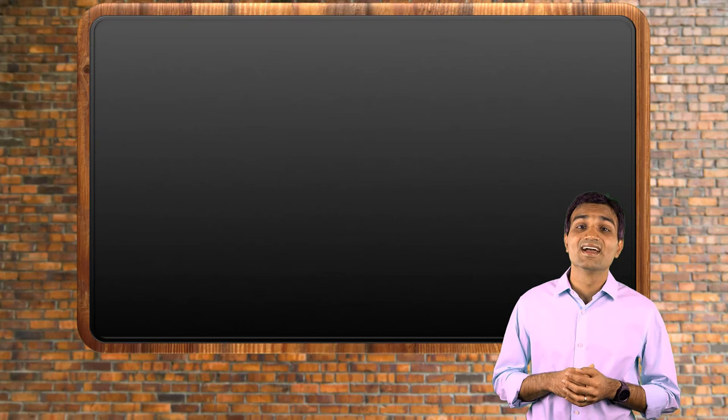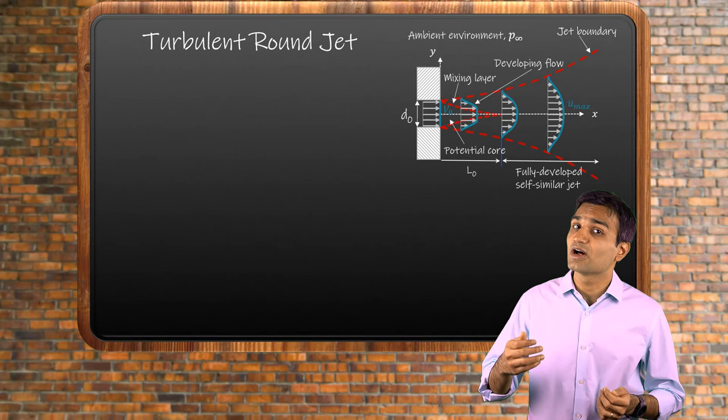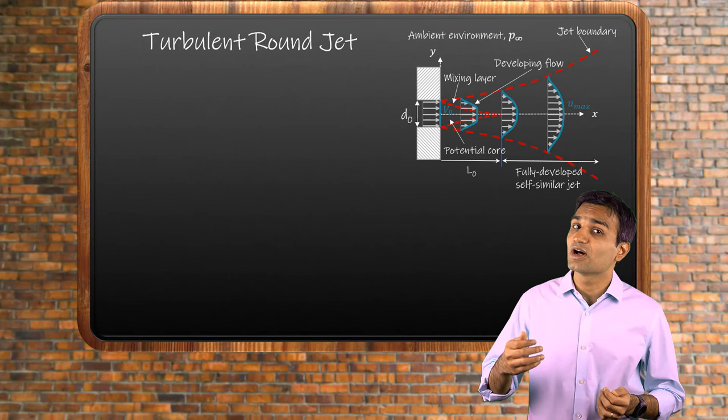Round jets are more resilient to instabilities compared to plane jets and transition to turbulence at much larger Reynolds number of 2000. A different set of similarity functions are used to solve for round turbulent jets. Without going into similarity analysis again, we will discuss the obtained results here.